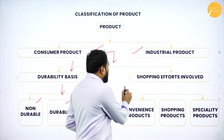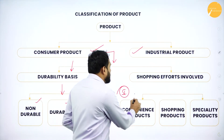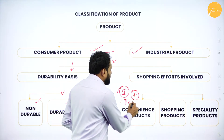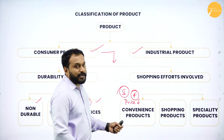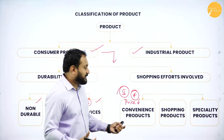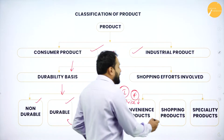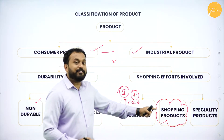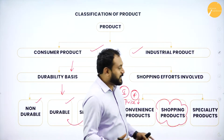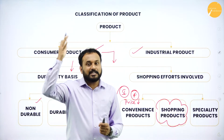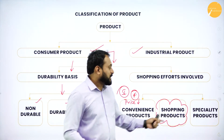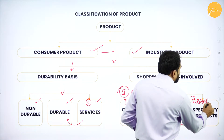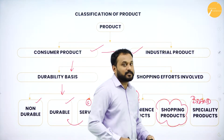Convenience products are purchased immediately and frequently, and are not costly — examples include toothbrush and toothpaste. Shopping products are costly, purchased occasionally or once a year, and involve comparison before buying. Specialty products involve strong brand loyalty because of a unique feature in that particular brand.